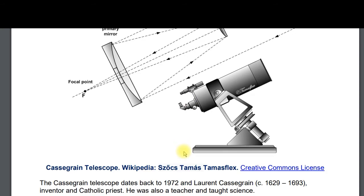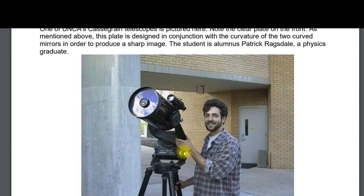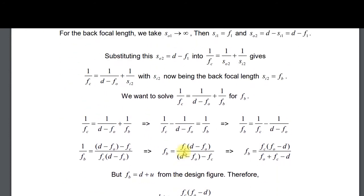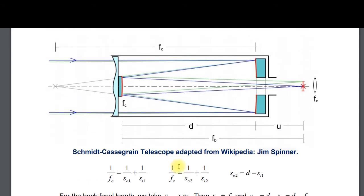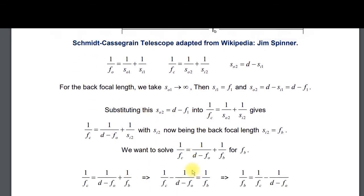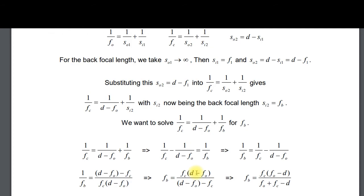For the Cassegrain telescope, this is again a two-step problem where you use the lens formula twice, and you have this distance D. We did that on the last exam. Know this process — it comes up a lot in the course. You use the first formula, then use the D minus the intermediate image position. Look this over.